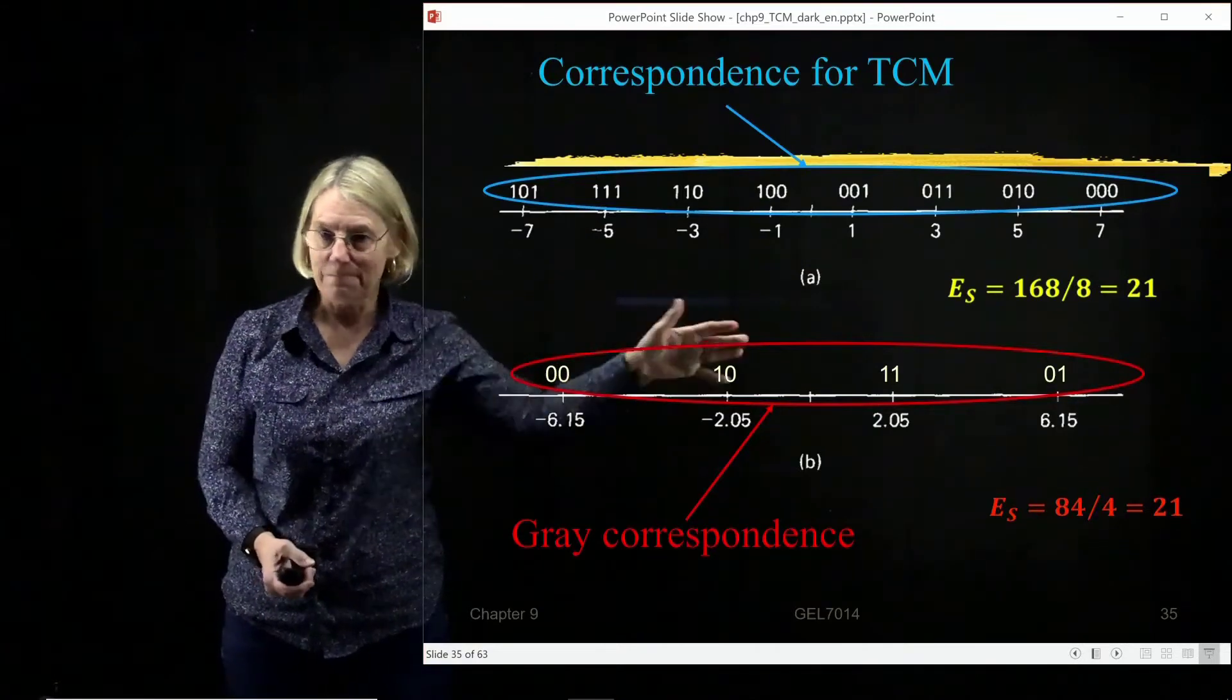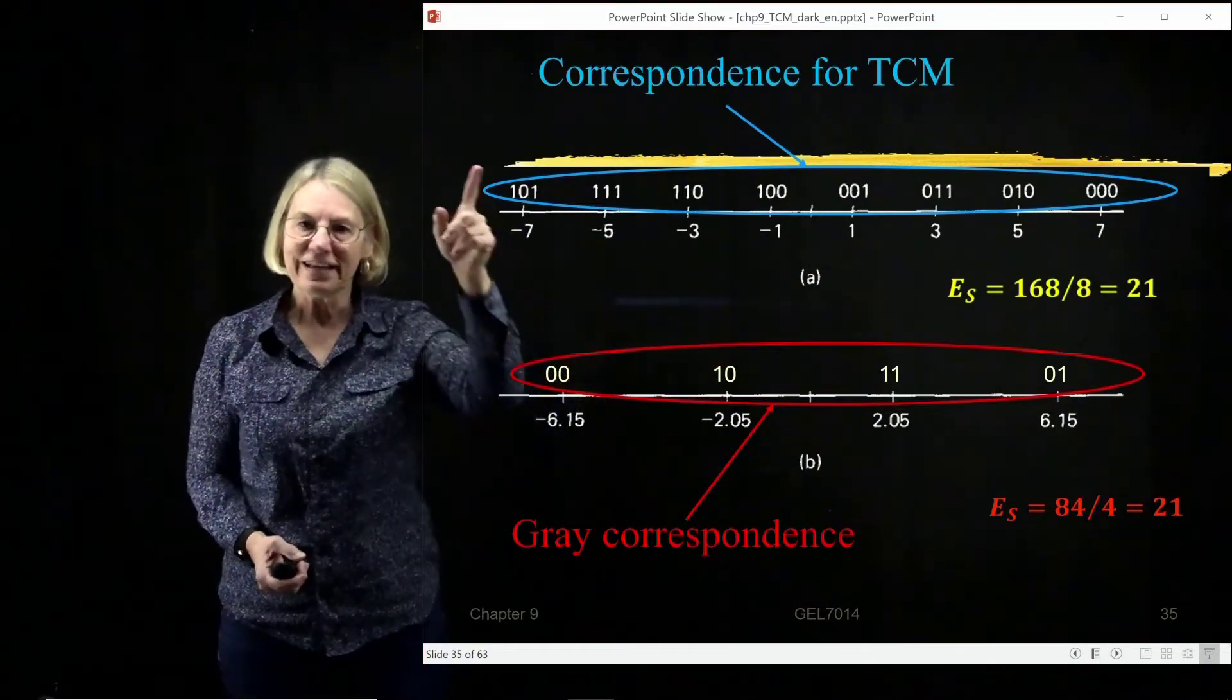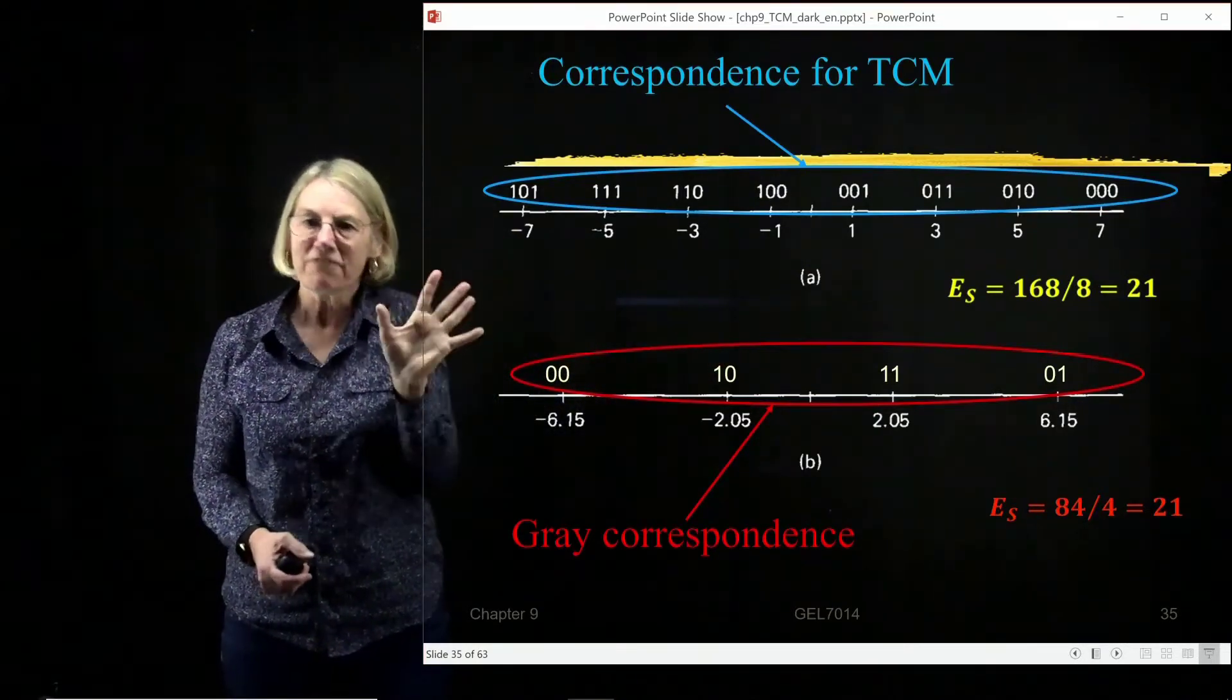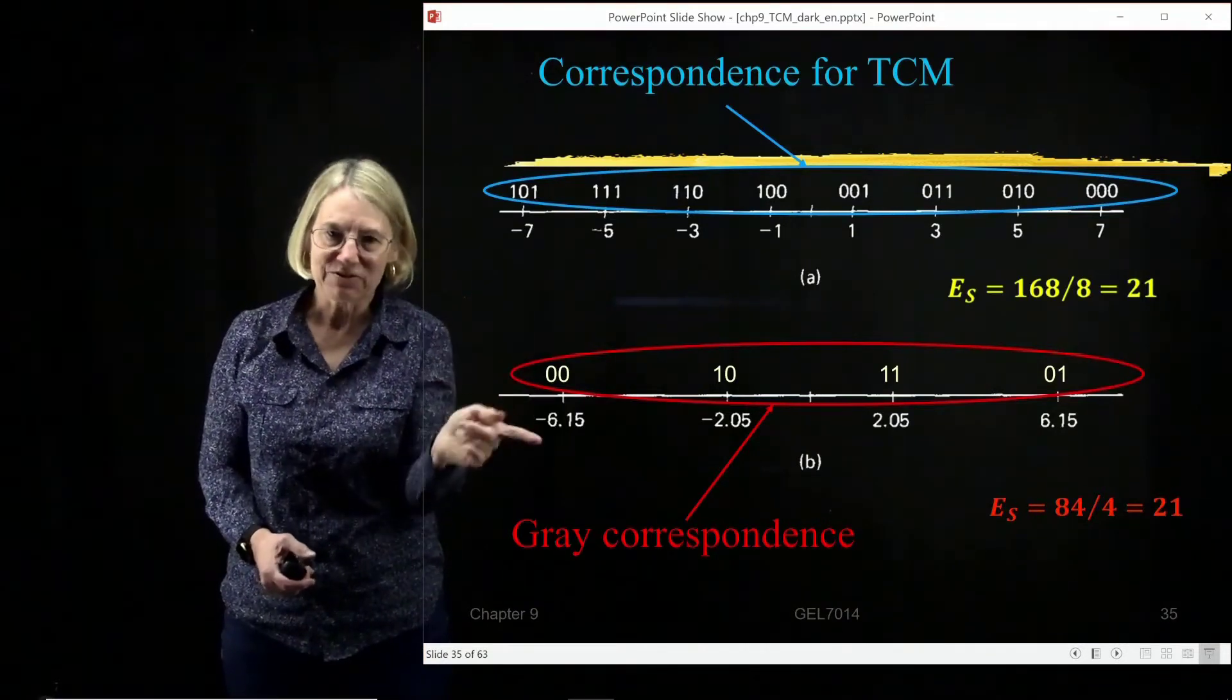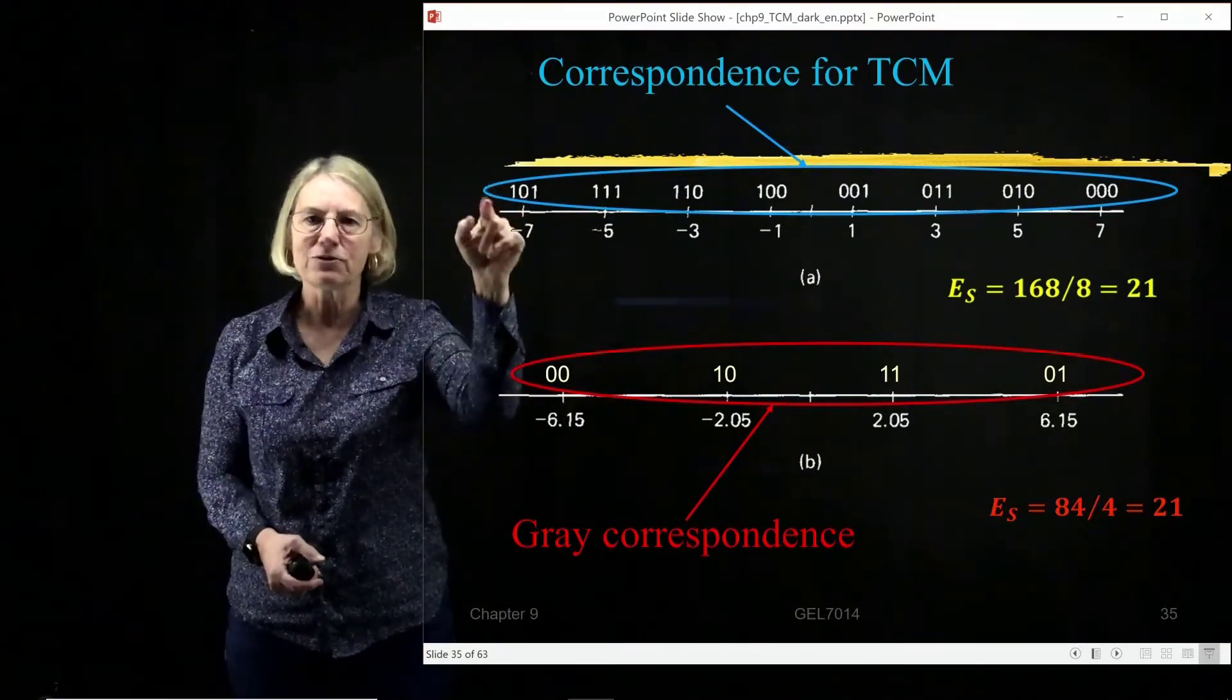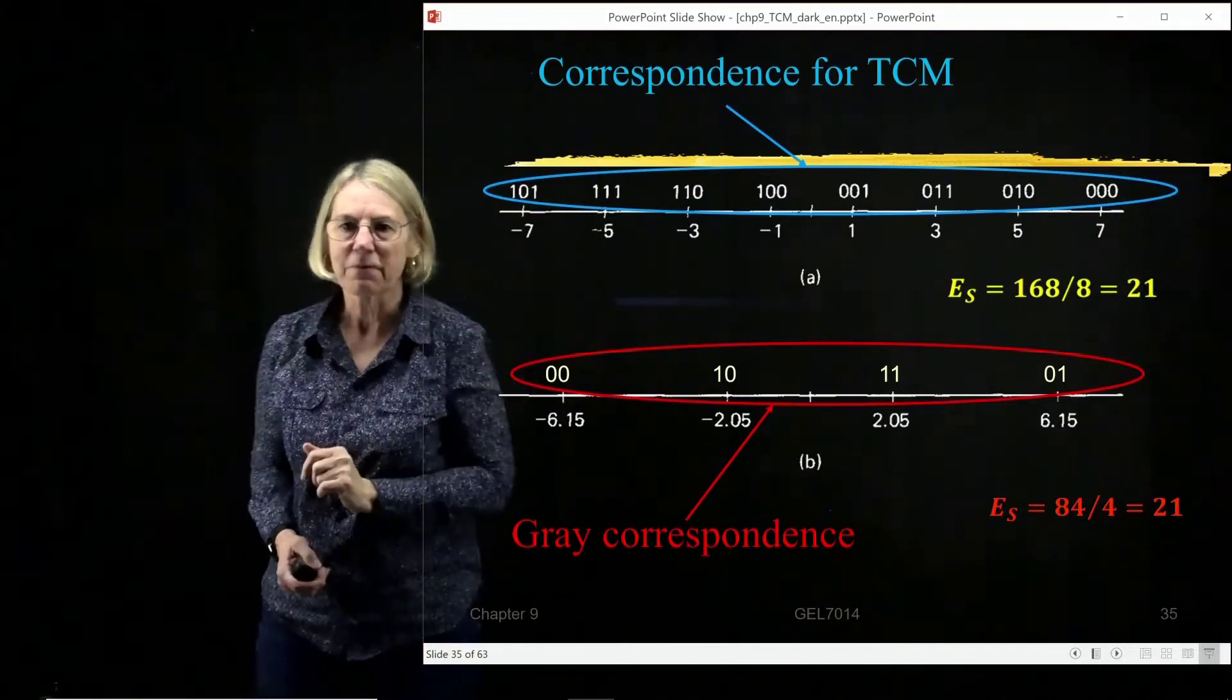It doesn't really matter because we're not going to use it. But here, just to highlight that if I used no coding, I would use a gray-code. And if I used TCM, I would use the correspondence that comes from the set partitioning.